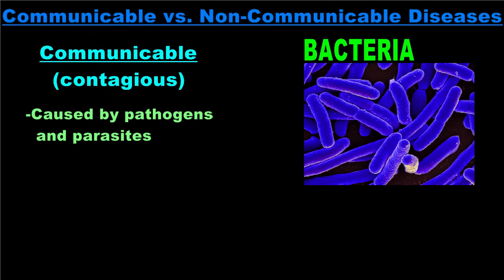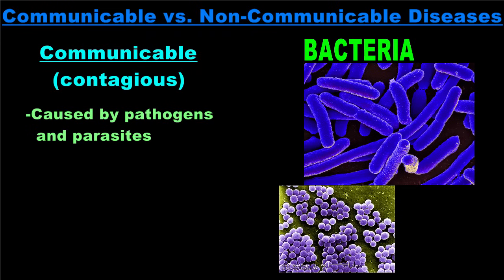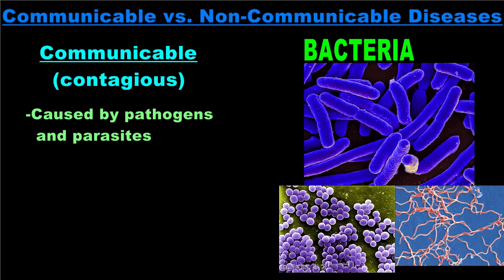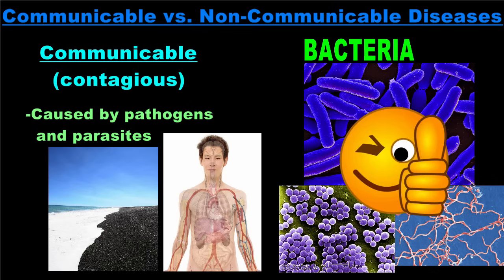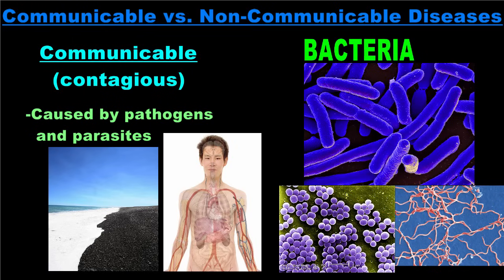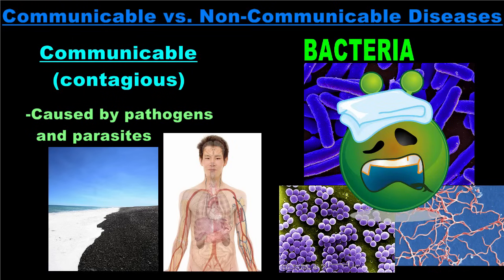Another type of pathogen that you are probably familiar with is bacteria. Unlike viruses, bacteria are alive. They are single-celled organisms that are found everywhere on Earth, from soil, air, and water, to the surface of your skin, and even inside your body. Most bacteria are beneficial in some way and do not cause disease. In fact, less than 1% of known bacterial species cause illness in humans. Those that are pathogenic, however, can cause some pretty serious diseases.